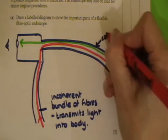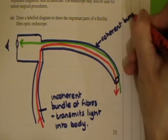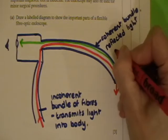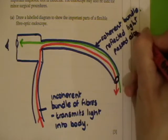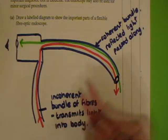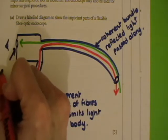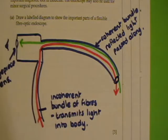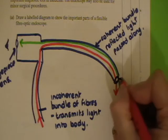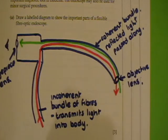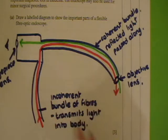And then this is your coherent bundle, and that's where the reflected light passes along. The mark scheme gave two marks for these two bundles as essential. For your third mark, you could label your eyepiece lens — they said you could also call that a computer. You could label your objective lens, also called the distal tip. You could also add channels for water and for instruments. Any three of those would get you three marks.